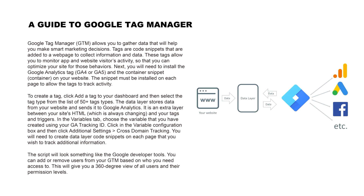The data layer stores data from your website and sends it to Google Analytics. It is an extra layer between your site's HTML, which is always changing, and your tags and triggers.